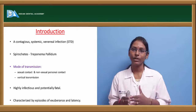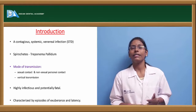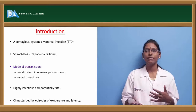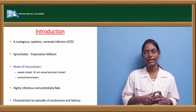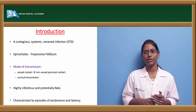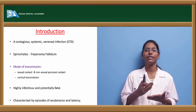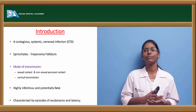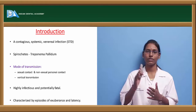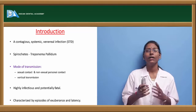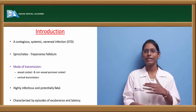Treponema pallidum, which is a spirochete, is the responsible organism for causation of syphilis. The modes of transmission are of various types. The primary mode is through unprotected sexual contact. It can also be transmitted through vertical transmission, that is from mother to child during parturition, and also through non-sexual personal contact, which is direct contact with the highly infectious lesions in various stages of syphilis.